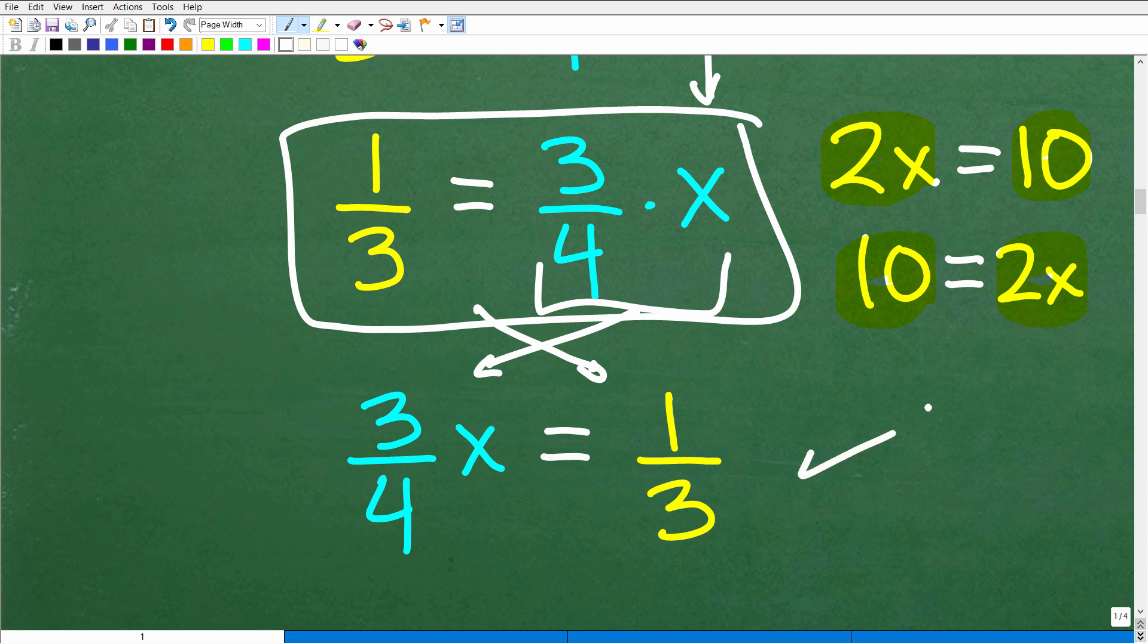So now I'm going to go ahead and concentrate on solving this basic equation. Three fourths X is equal to one third. All right. Let's go ahead and do that right now.